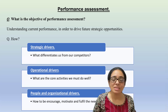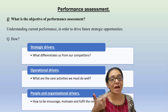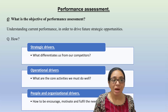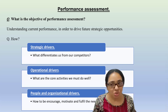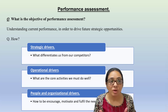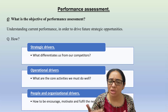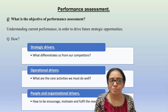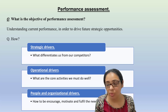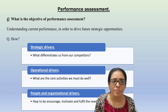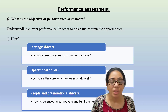Recalling from previous videos, we discussed strategic drivers and operational drivers. Now we'll talk about people and organizational drivers. Strategic drivers are what differentiate us from our competitors — we covered industry and market, customers, and competitive advantage. Operational drivers are the core activities we must do — we talked about revenue and cost. Now we turn to people and organizational drivers.